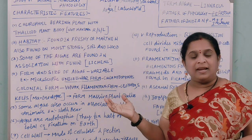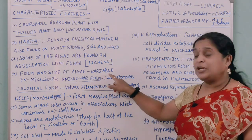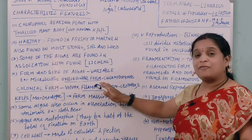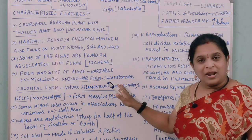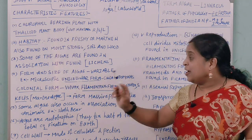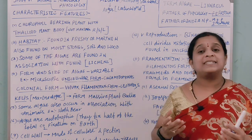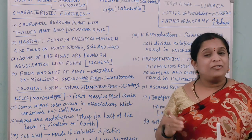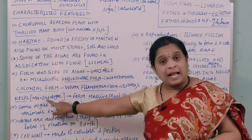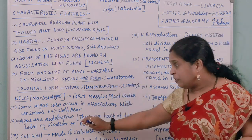The fourth characteristic is the form and size of algae, which is variable — ranging from unicellular to filamentous structures, with some colonial forms as well. Examples include: Chlamydomonas, a microscopic unicellular form with a cup-shaped chloroplast; Volvox, a colonial form; and filamentous forms such as Ulothrix and Spirogyra, which has a spiral-shaped chloroplast.